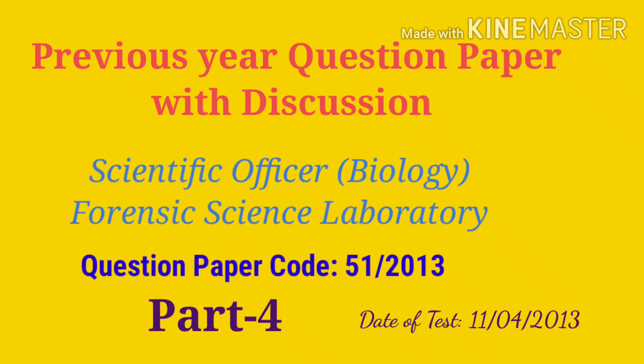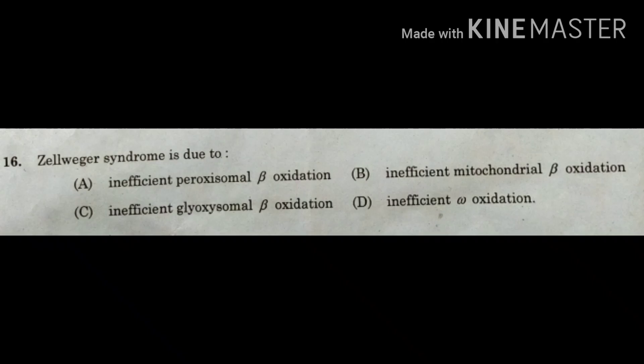The question is: Zellweger's syndrome is due to — option A: inefficient peroxisomal beta oxidation, option B: inefficient mitochondrial beta oxidation, option C: inefficient glyoxosomal beta oxidation, and option D: inefficient omega oxidation.